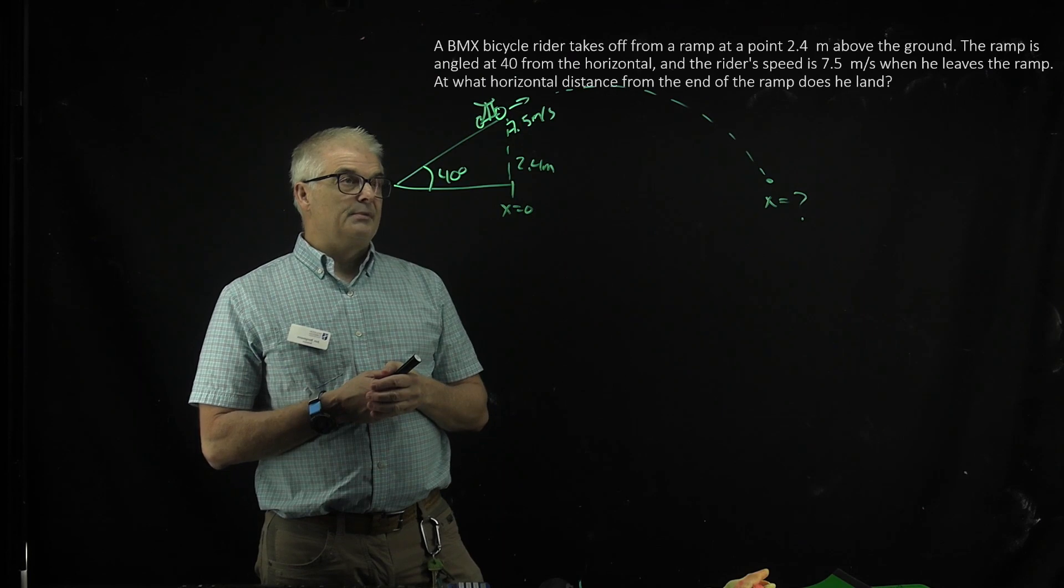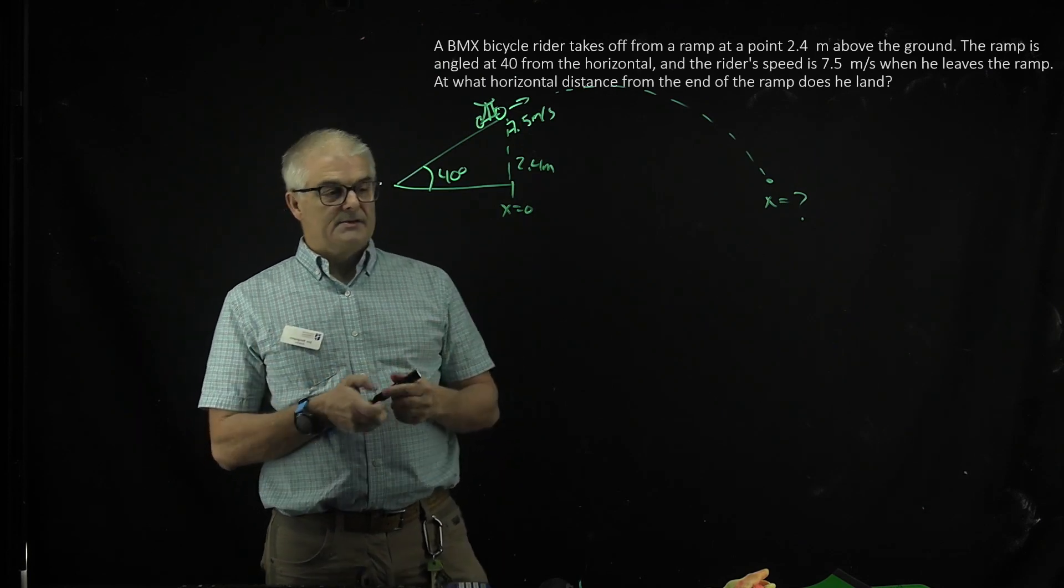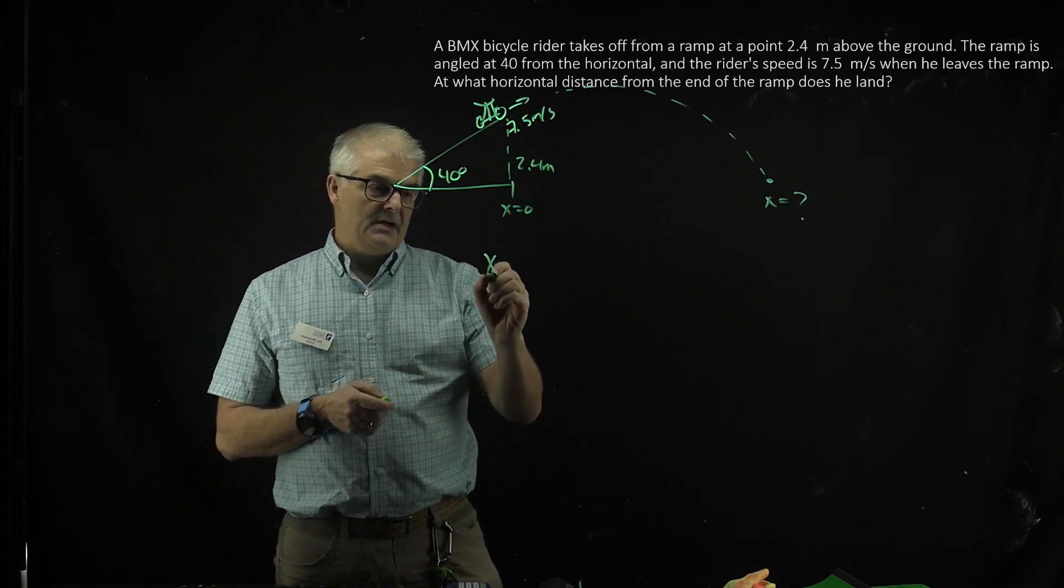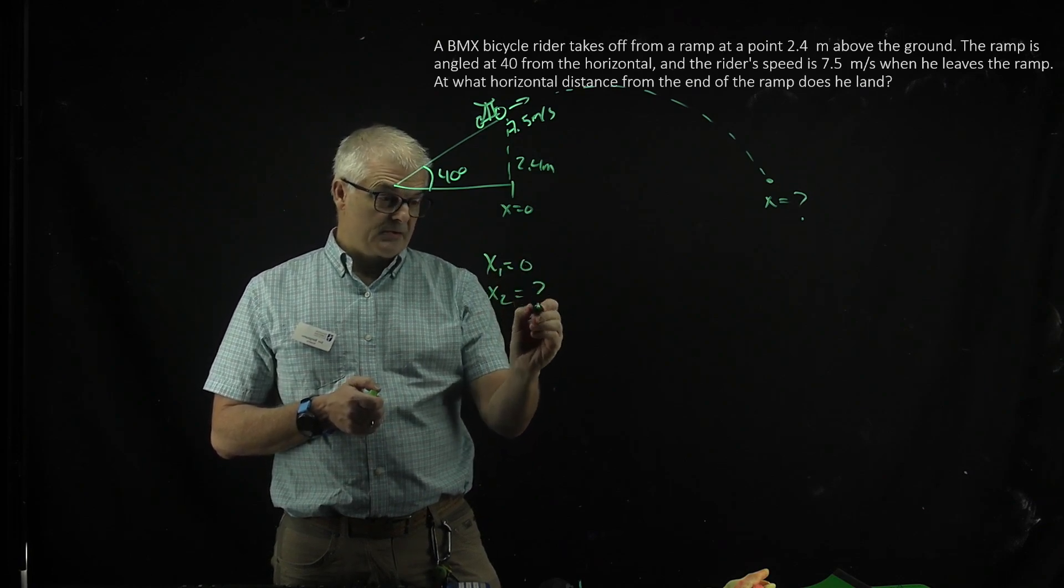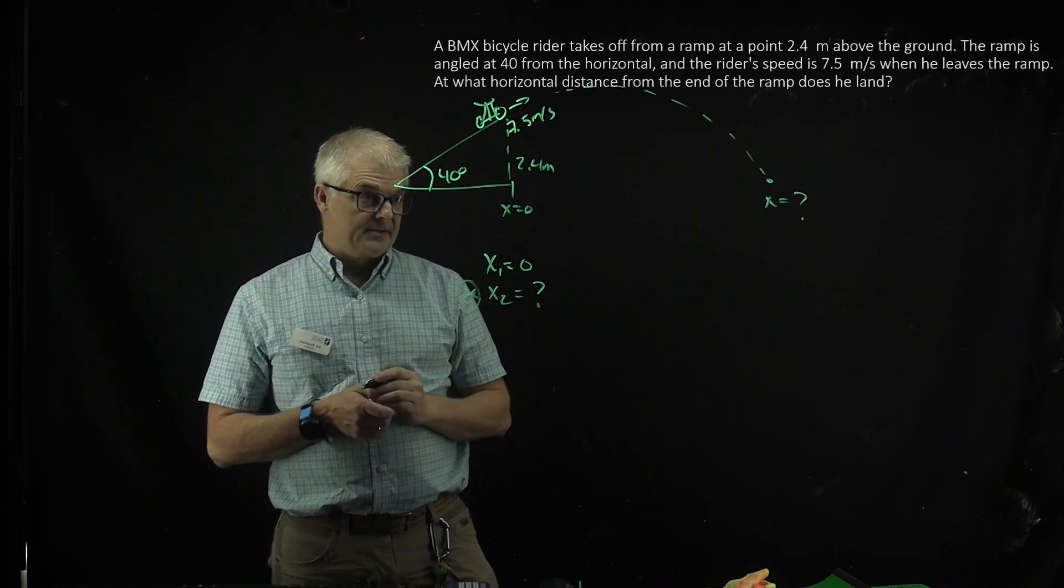Again, the same thing applies. You're going to write all the known x's and y's, so we know x1 is 0, x2 is question mark. That's the big question we're trying to find the answer to.